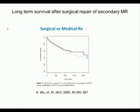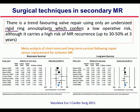The reason for the weaker Class 2B recommendation when no CABG is planned is that long-term survival after surgical repair of secondary mitral regurgitation is not different from long-term survival with medical treatment alone — as reported in the classical paper from Ann Arbor by Dr. Wu and the group of Stephen Bolling. Regarding the type of operation, annuloplasty is preferred to mitral valve replacement, at least according to meta-analysis, which favors repair over replacement in terms of mortality.